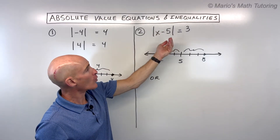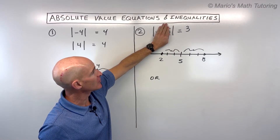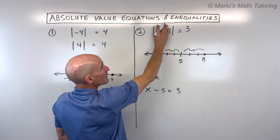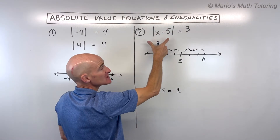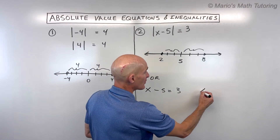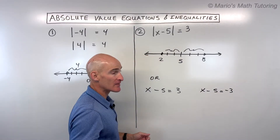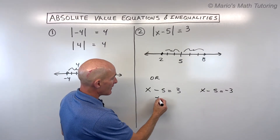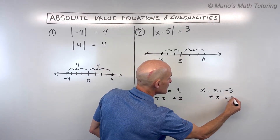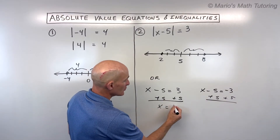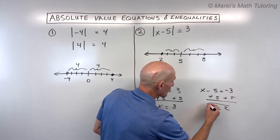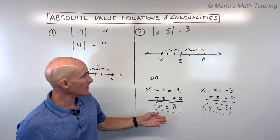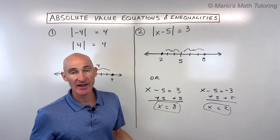Another way to do this problem: working backwards, whatever was inside the absolute value originally could have been positive three or negative three. So x minus five equals positive three, or x minus five equals negative three. Adding five to both sides in each case gives us x equals eight or x equals two. When we say 'or' in math, it means union — the combination of both solutions together.